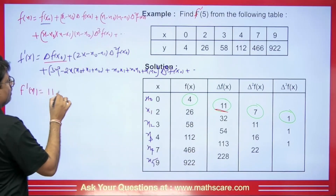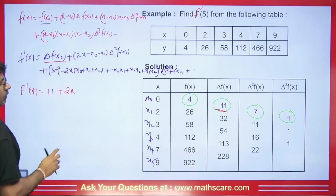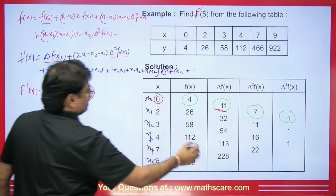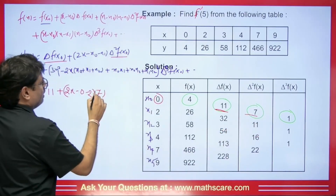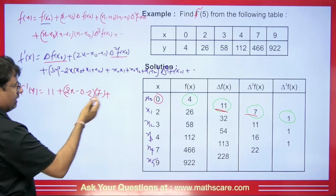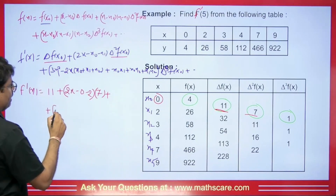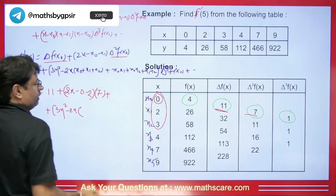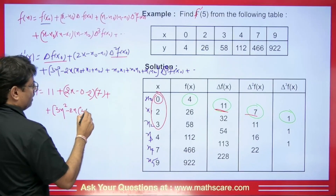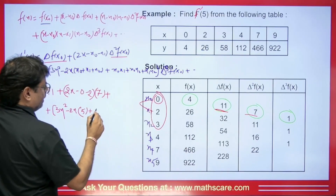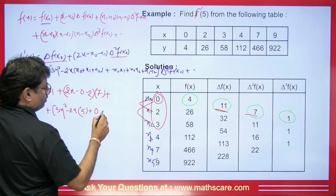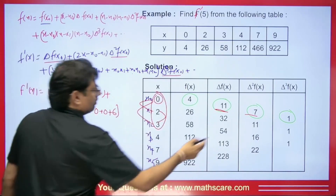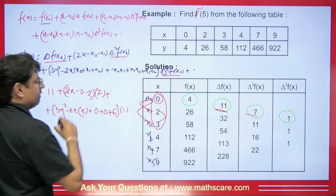We will find the value of f'(x). Putting the values: Δf(x0) = 11. Then we have 2x minus (x0 + x1) = 2x minus (0 + 2) = 2x − 2, multiplied by Δ²f(x0) = 7. Then 3x² minus 2x·(x0 + x1 + x2) where x0 + x1 + x2 = 0 + 2 + 3 = 5, plus x0·x1 + x0·x2 + x1·x2 = 0 + 0 + 6 = 6, multiplied by Δ³f(x0) = 1.